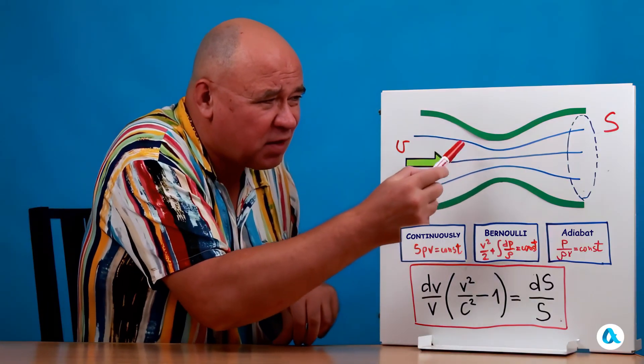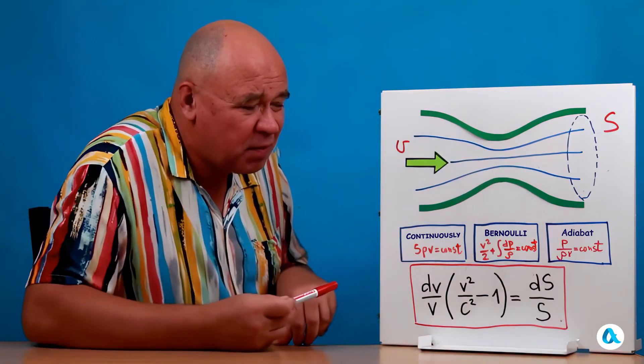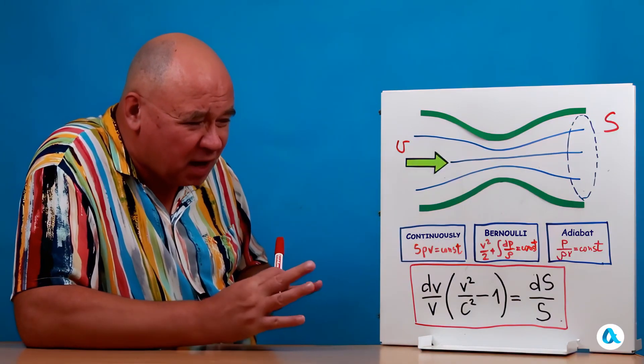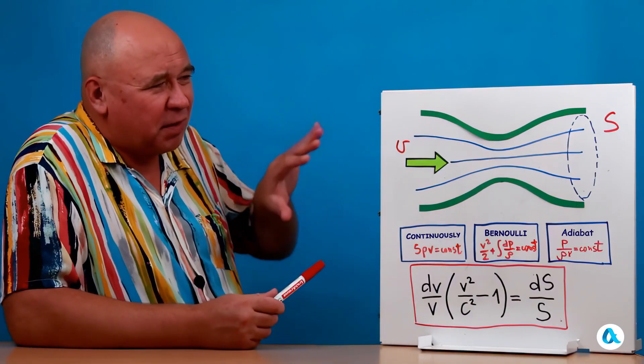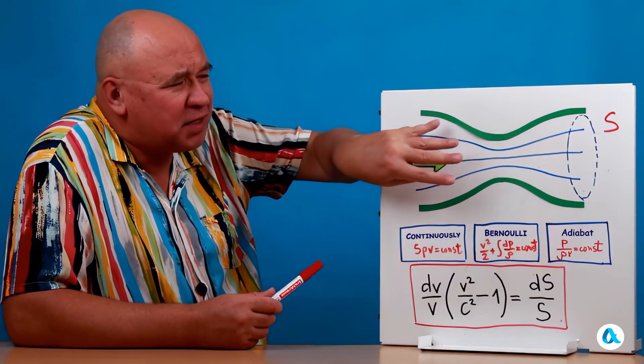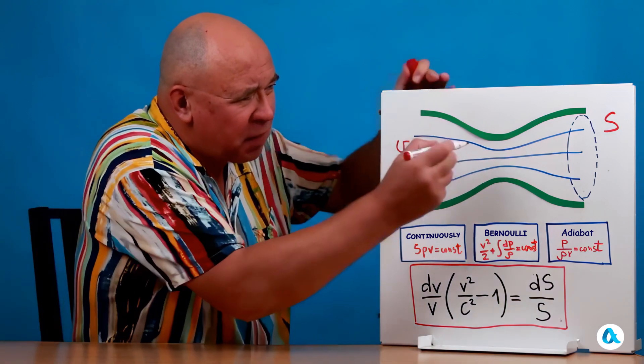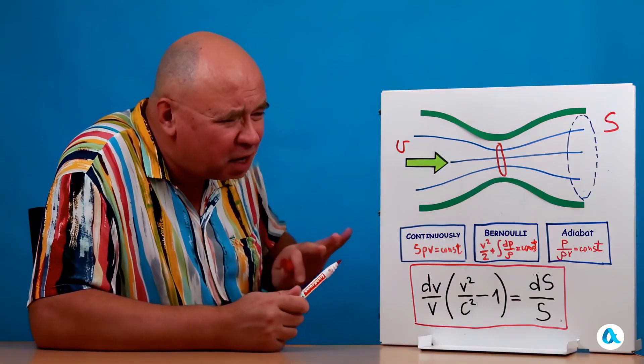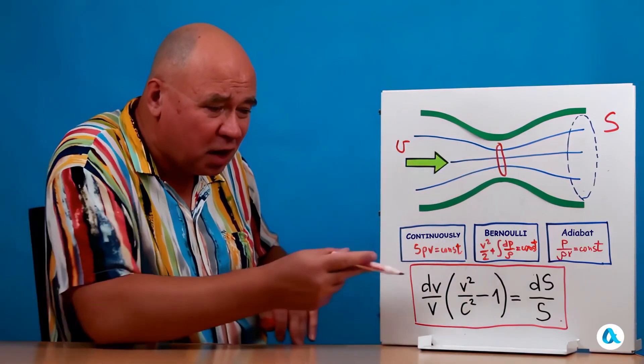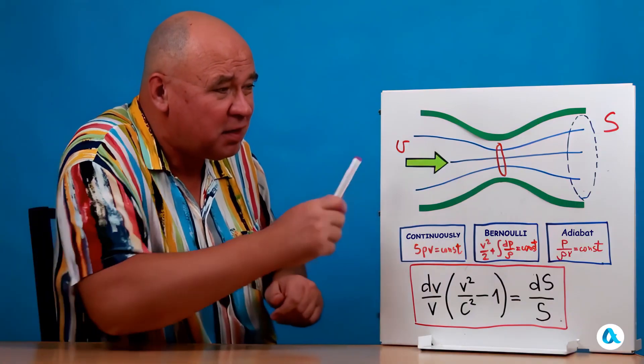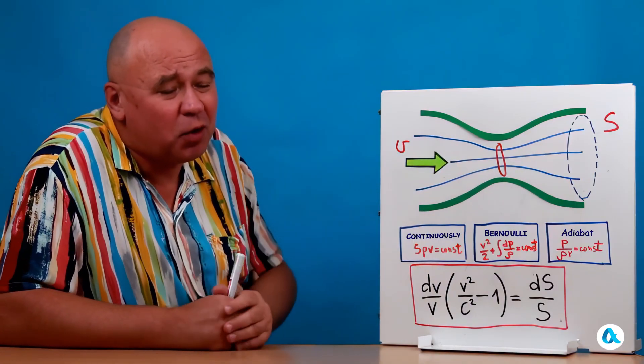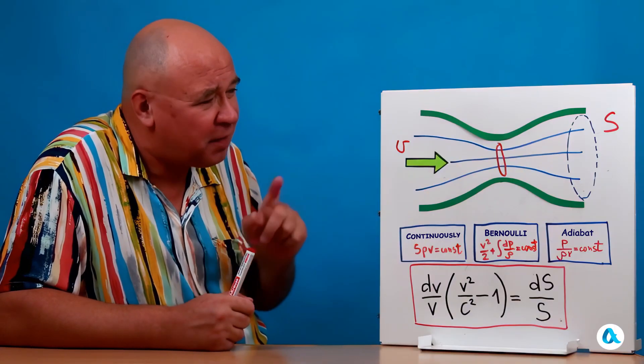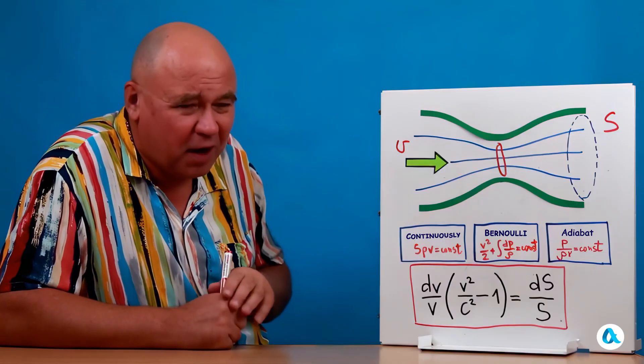So, here, if we manage to push the flow through the speed of sound at this section, which is exactly what the Laval nozzle is designed for, then everything happens, well, in a sense, in reverse. Here, the cross-section was decreasing, and the velocity was increasing. We reached the critical cross-section. If the local speed of sound is reached here, then you can, so to speak, jump to the other side of this equation. And after that, the cross-section will increase and the velocity will also increase. And this is the very principle that underlies the physics of the Laval nozzle.